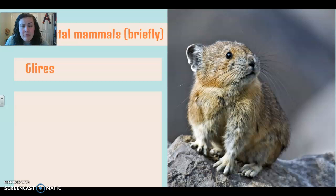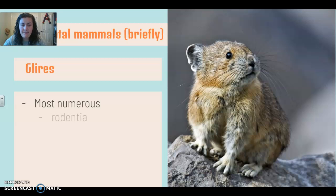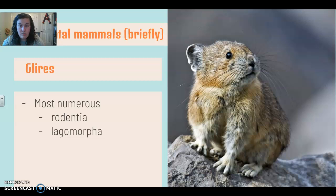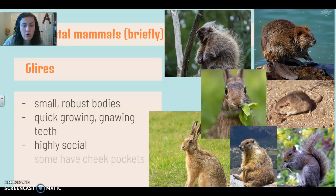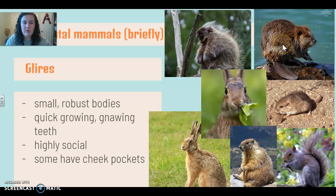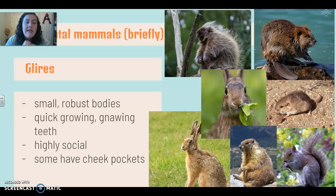Our next group of placental mammals is the Glears. Boy oh boy, this is the biggest group. This is going to include all of your rodents and all of your lagomorphs — your rabbits and hares and bunnies and things like that. This is a huge group. Your Glears are in a group together because they have small, robust bodies — they're going to be really tiny and compact and ball-shaped, basically chunky. They have quickly growing, gnawing teeth.